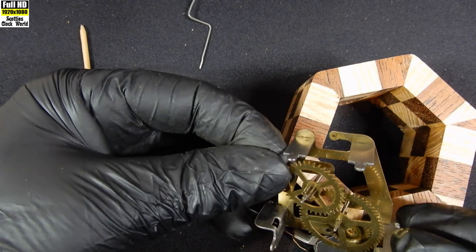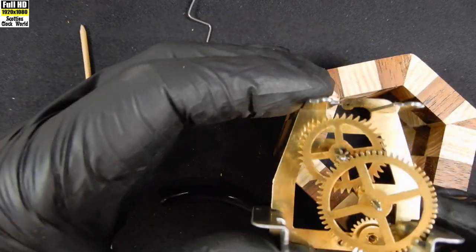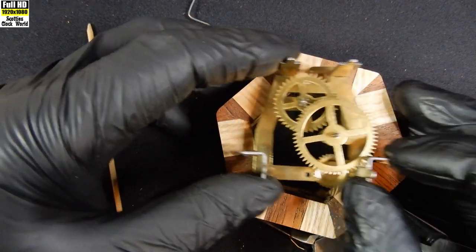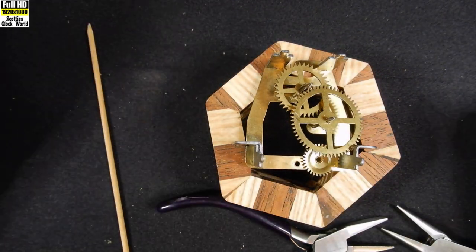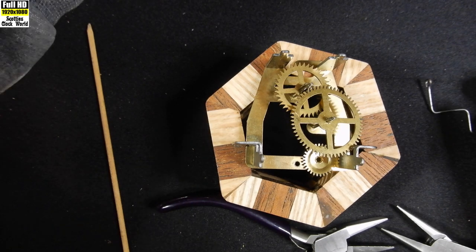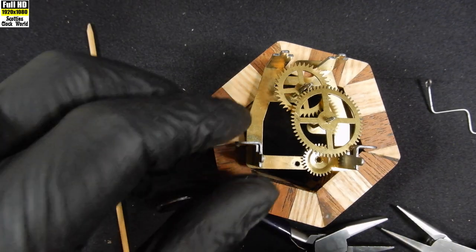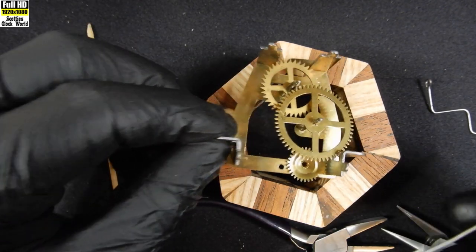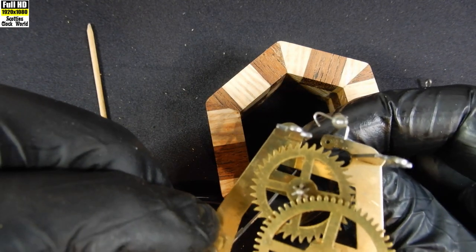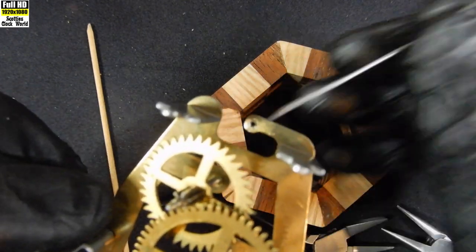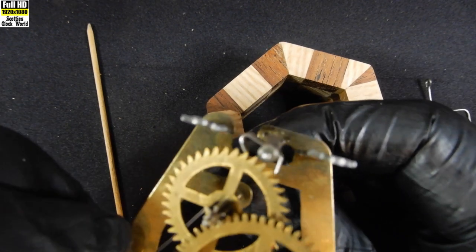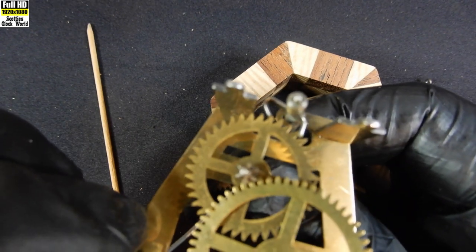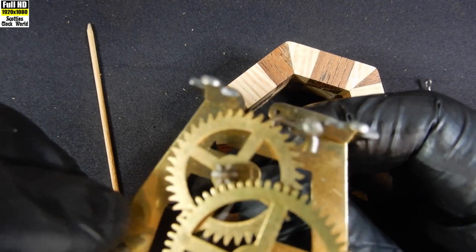Put that back there. And the escape wheel goes in there. And then the tiny little crutch sits on top of it there. Once we get that in there, then that sits there. We'll clean these parts up, we'll put them back together again.